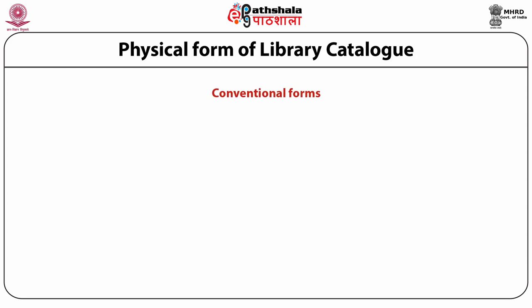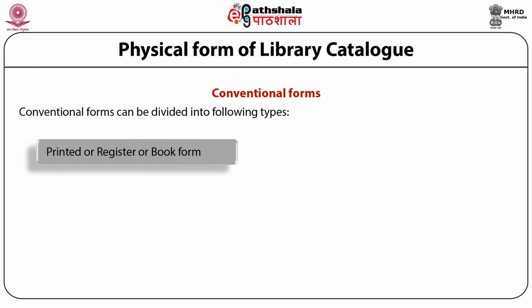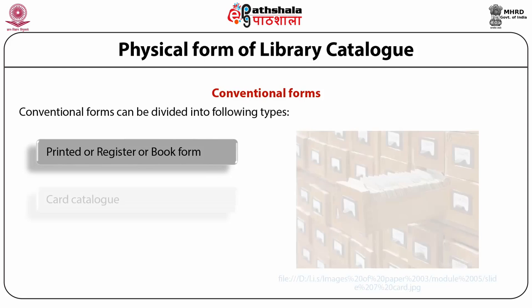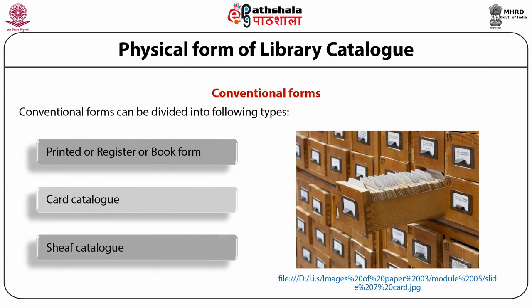The first conventional form is the printed or register or book form. Conventional forms can be divided into: first, printed or register or book form; second, card catalog; and third, sheaf catalog. The catalog in which catalog entries are handwritten or printed and bound into a volume is known as registered or printed or book catalog.